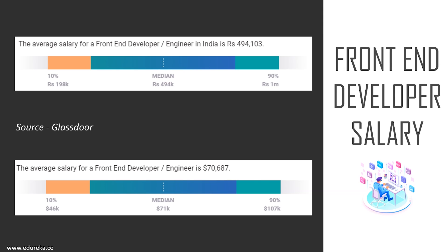Now let's look at the salary trends of a front-end developer. The average salary in India is around four lakh ninety-four thousand rupees. In the USA, a senior front-end developer earns around one hundred thousand dollars on average, whereas a junior front-end developer has an average income of seventy thousand dollars. According to Glassdoor, front-end web developers have one of the most bankable skill sets today, with the national median income topping more than seventy thousand dollars, and in competitive markets it can rise above one hundred thousand dollars.